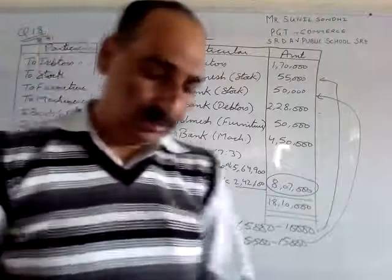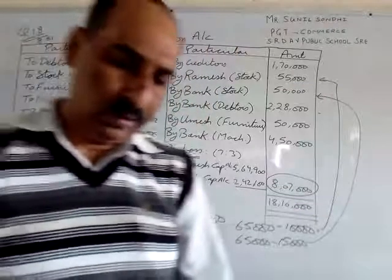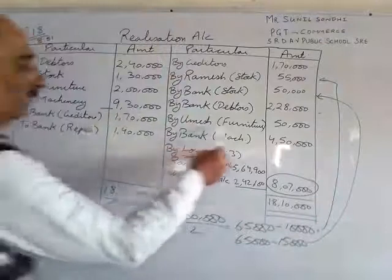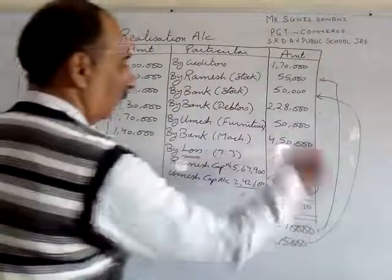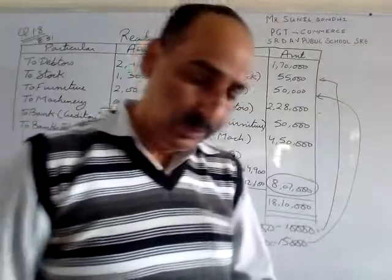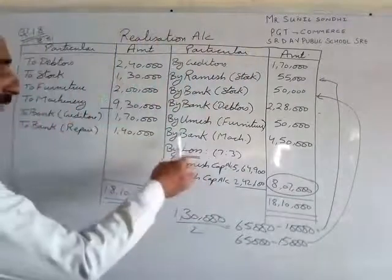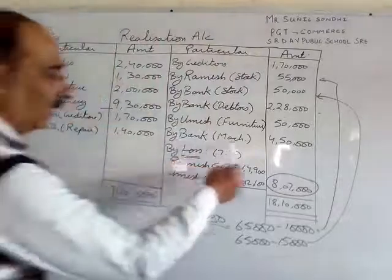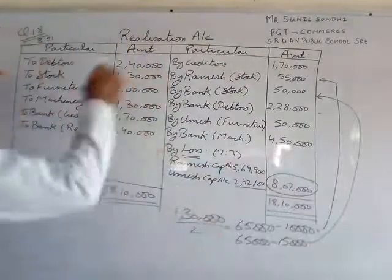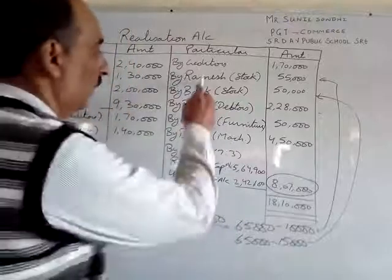Next adjustment: furniture was taken over by Umesh for 50,000 — by Umesh (furniture) 50,000. Aur machinery was sold for 4,50,000 — by bank (machinery) 4,50,000. Ya to koi partner le jayega, agar partner le jayega to partner ke naam likhenge; agar partner nahi le ja raha to bank mein aayega.